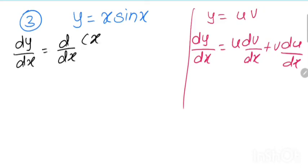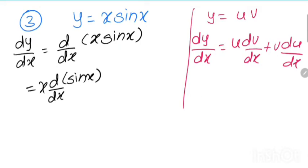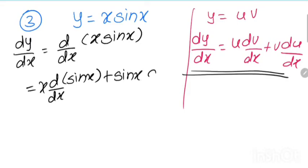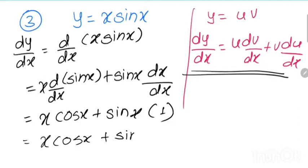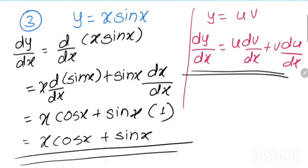We write dy by dx and put the value x sin x. Here u is x and v is sin x. Applying the formula: x times derivative of sin x, which is cos x, plus sin x times dx by dx which is 1. So finally we have x cos x plus sin x. This is our answer.